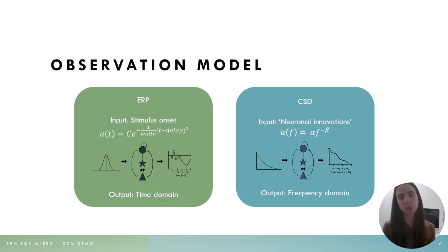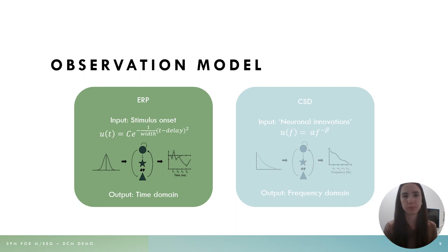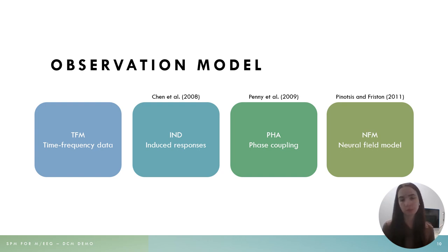In DCM for cross-spectral densities, or DCM for CSD, which is used for resting state data, we don't have an external input. Instead, we model spontaneous neuronal innovations as our input and the model returns predictions in the frequency domain. There are also phenomenological observation models like DCM for induced responses, which model a particular data feature — something worth reading about if relevant to your analysis. In this case we have ERP data — our MMN response — so we're going to use the ERP observation model with our standard and deviant tones as input.